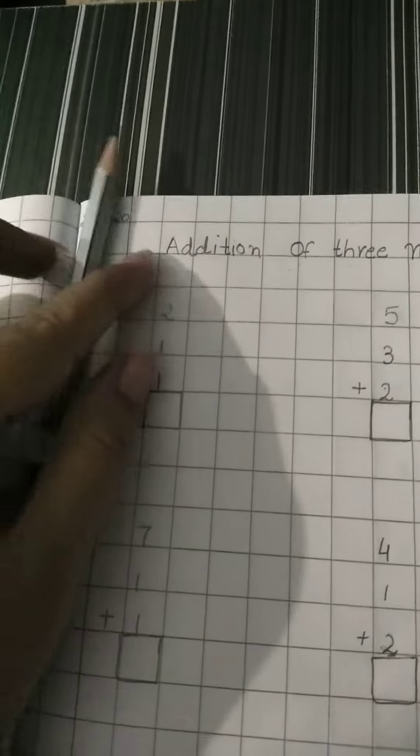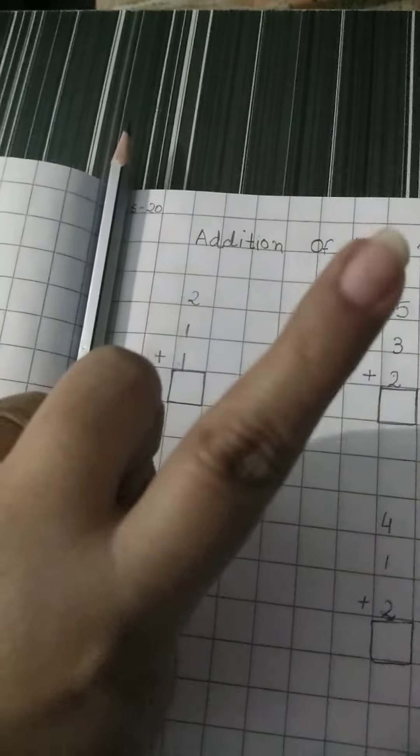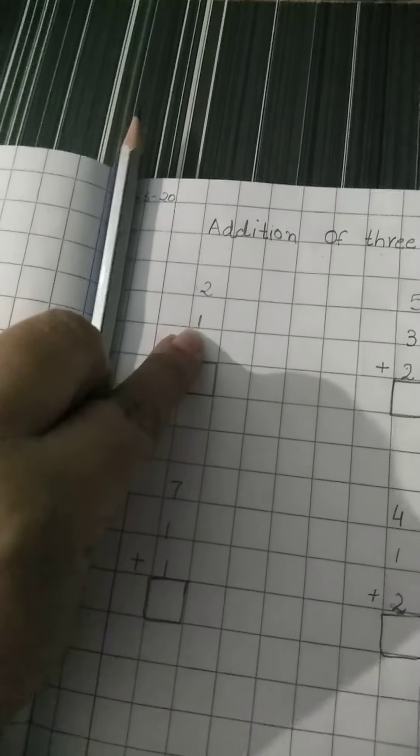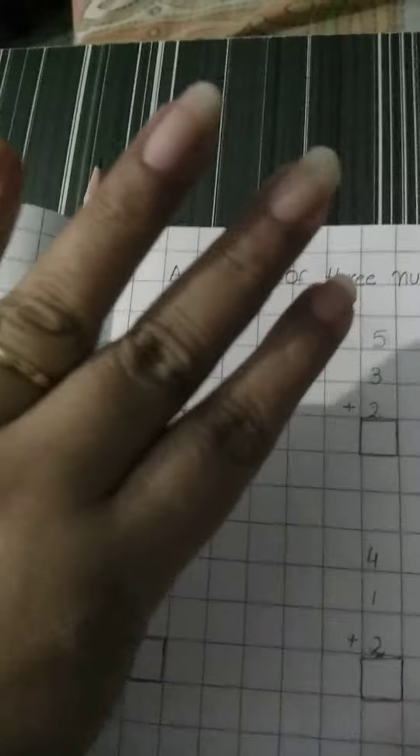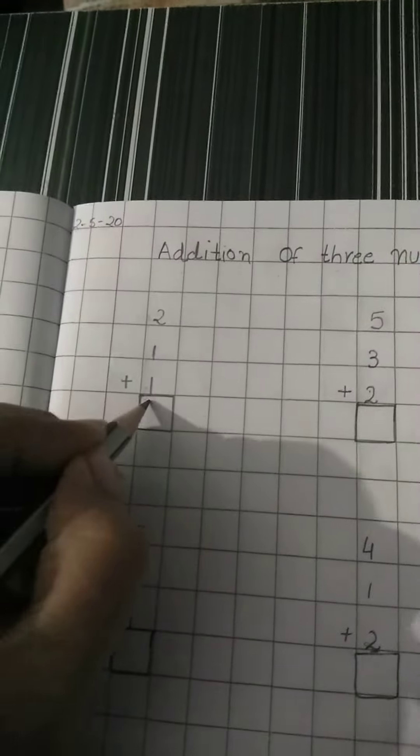Now let's count with the help of our fingers. Now the first number is 2. 1, 2. Then again is 1. Then one more finger. Then the last number is 1. Then now shall we count? 1, 2, 3, 4. So we will write over here 4.